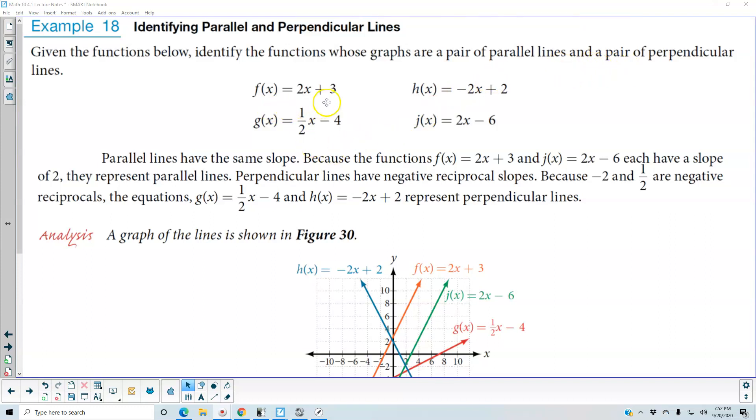We have f(x) = 2x + 3, g(x) = 1/2x - 4, h(x) = -2x + 2, and j(x) = 2x - 6.